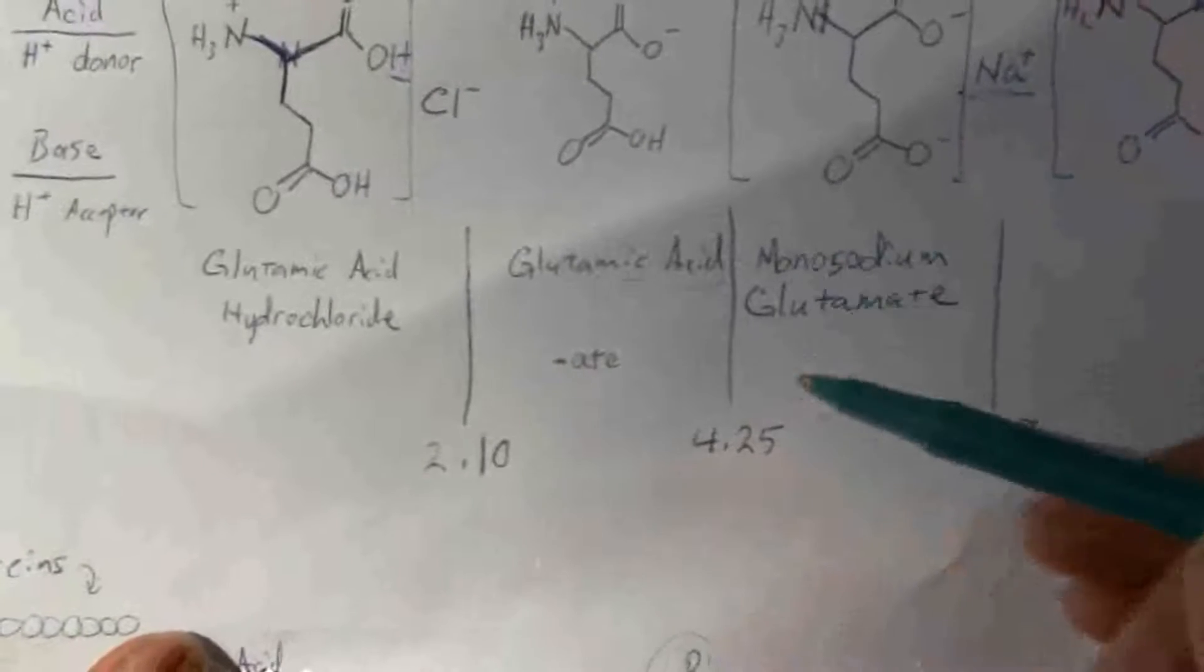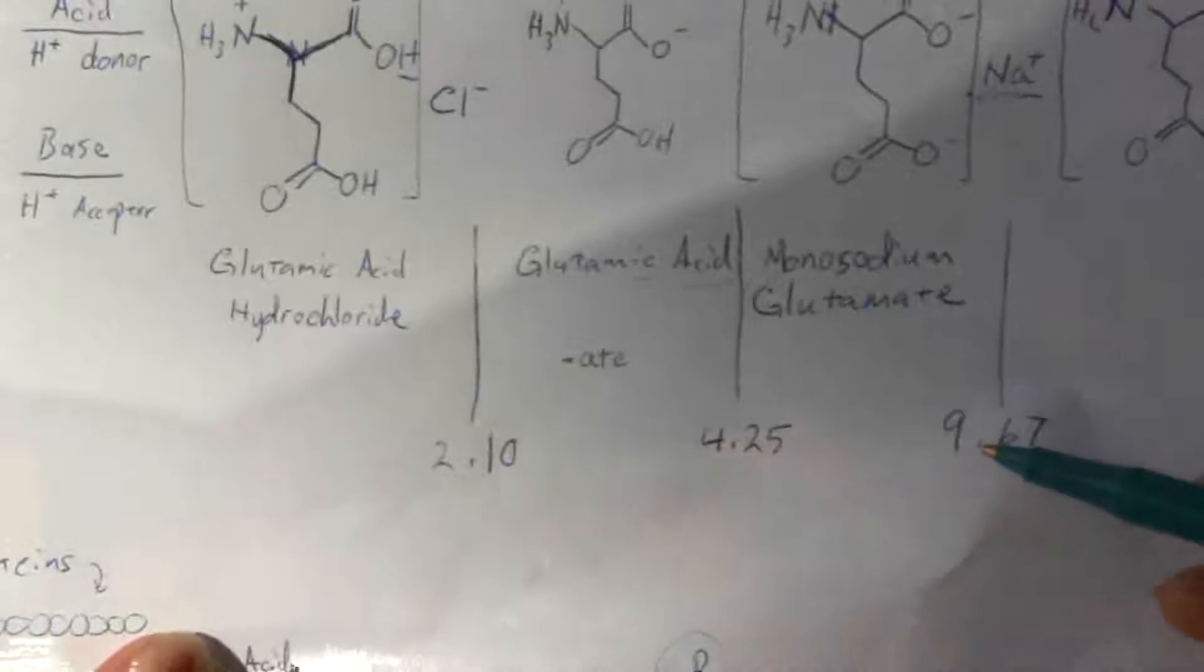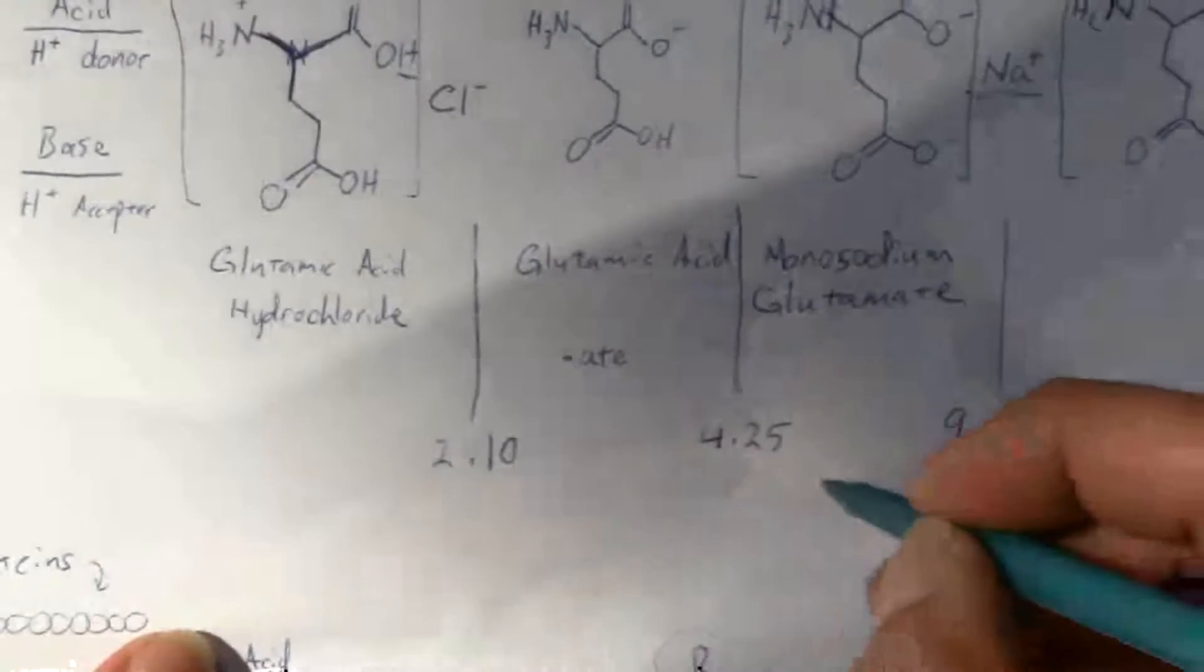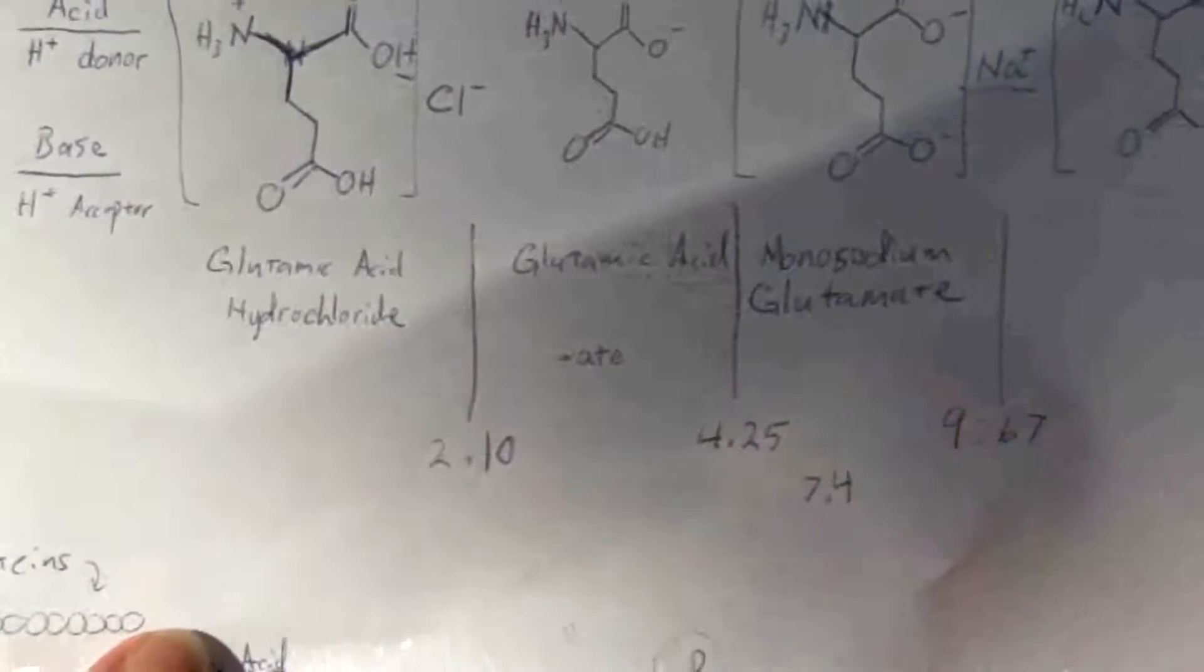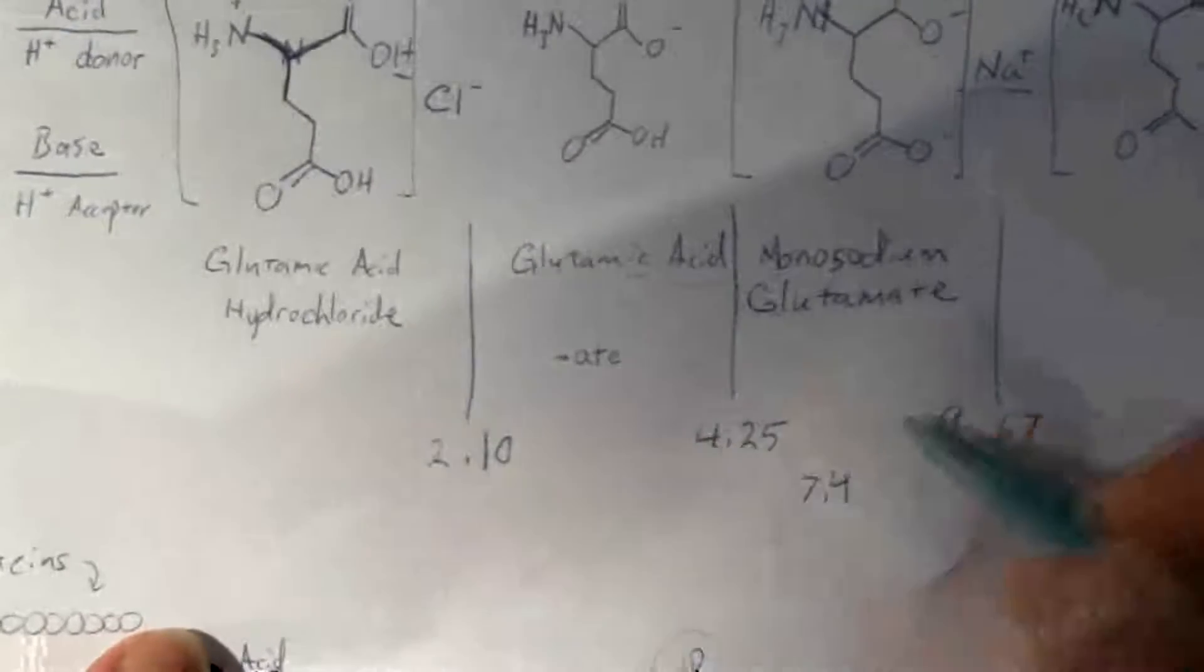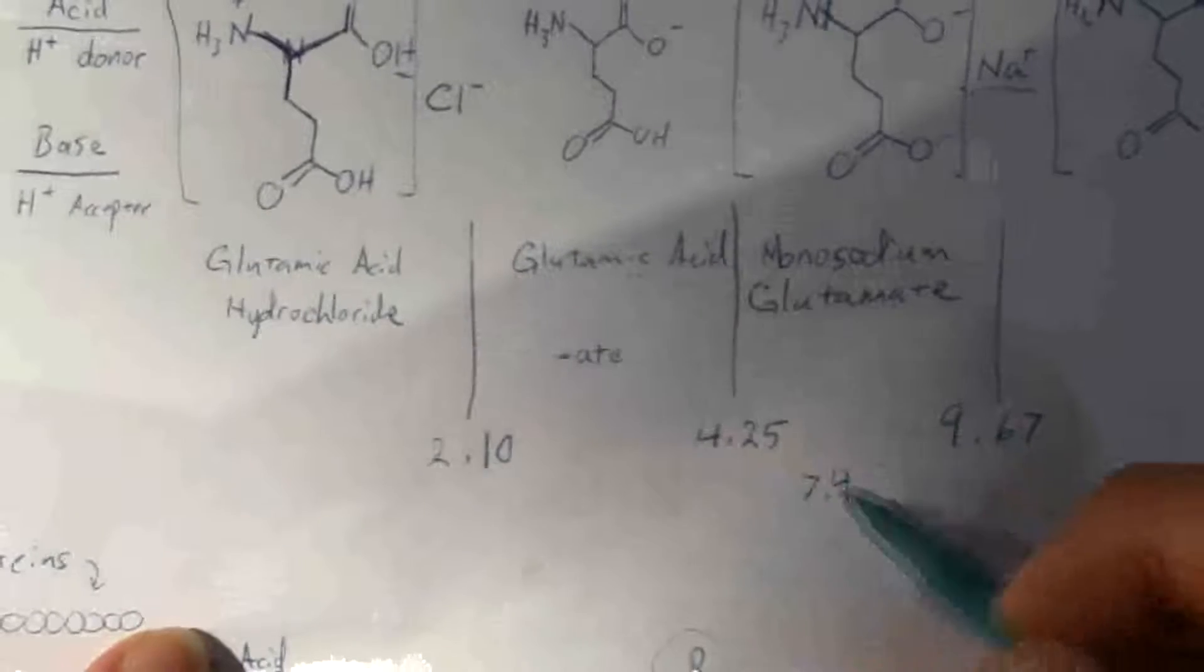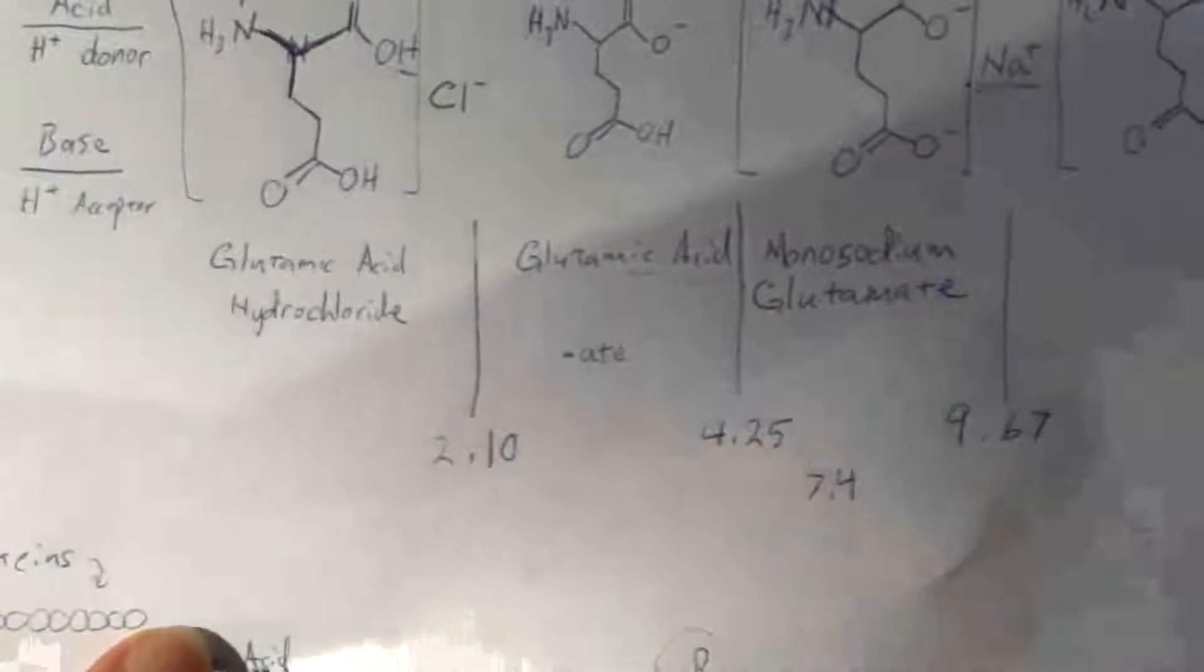Monosodium glutamate would just be if it's in a higher pH. Normal body pH is right here around 7.4. So monosodium glutamate is the typical form that you would find that amino acid in the body.